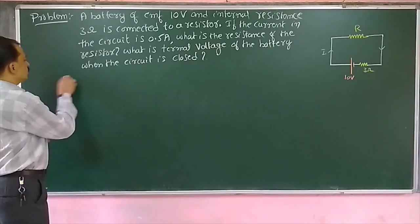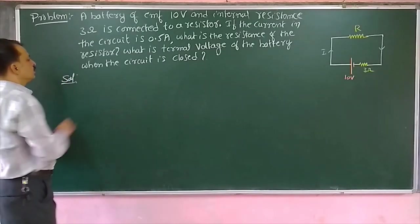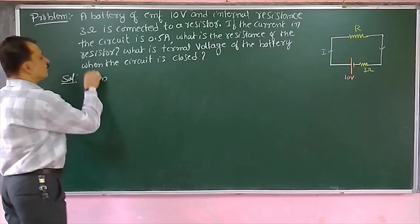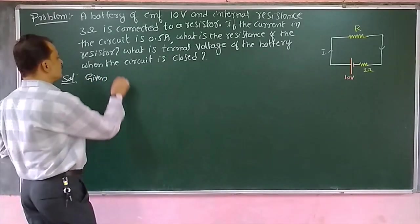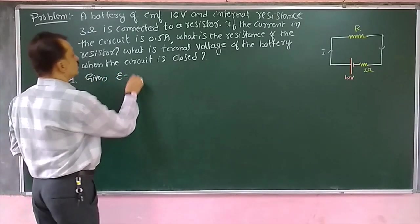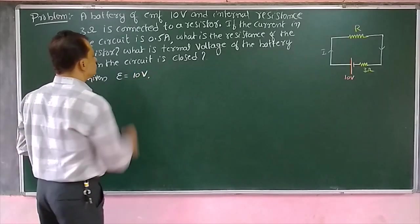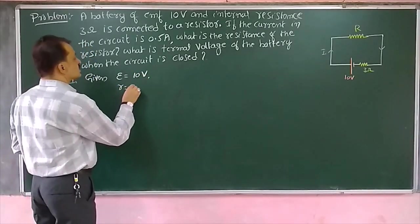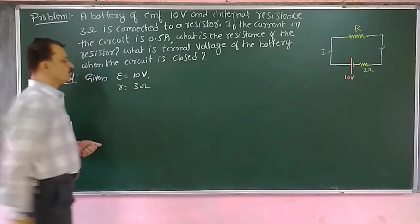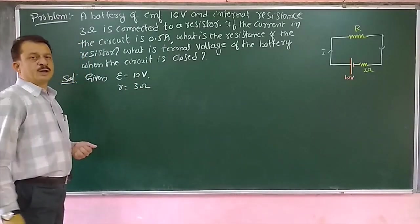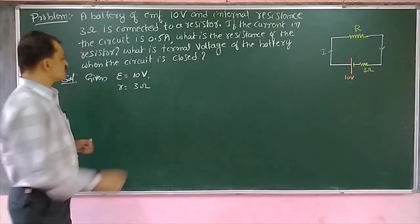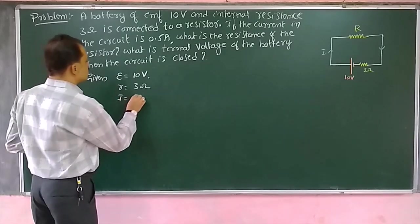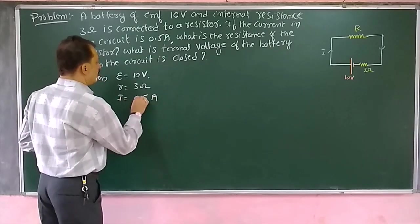Given: EMF of the cell is equal to 10 volts, internal resistance small r is equal to 3 ohms. When the circuit is connected, current starts to flow, and that current is equal to 0.5 amps.